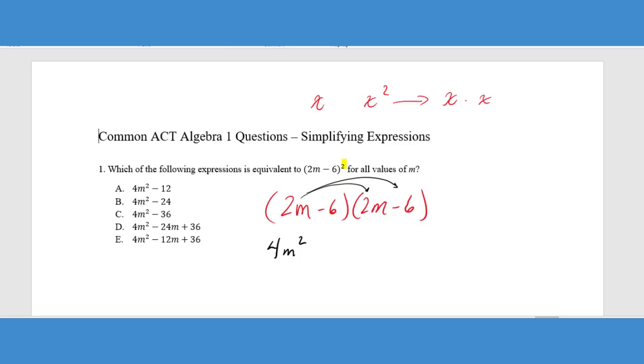2M times negative 6 gives me negative 12M. Then the second time I'm going to distribute the negative 6. So I get negative 12M and then negative times a negative is a positive 36. Now I need to combine like terms. We can see that we have an M and an M here. So those can be put together. I only have one M squared, so I'm just going to keep 4M squared by itself.